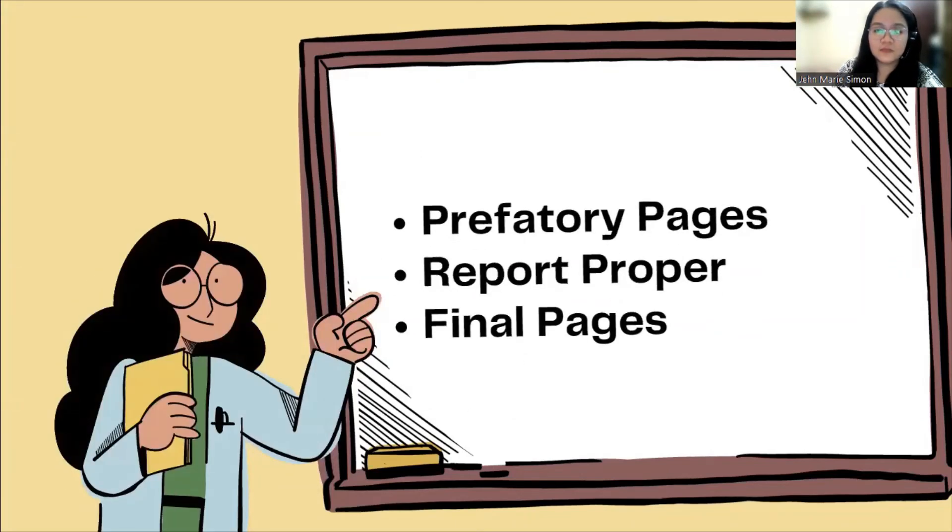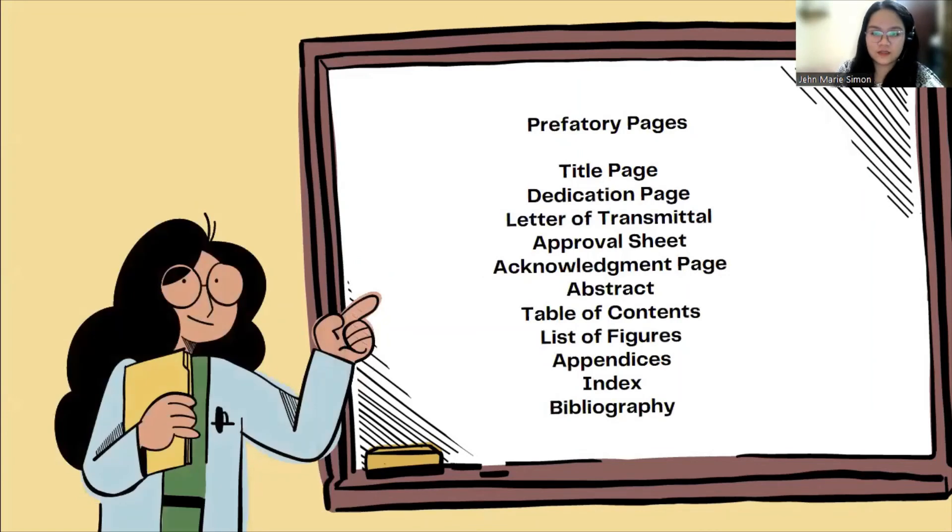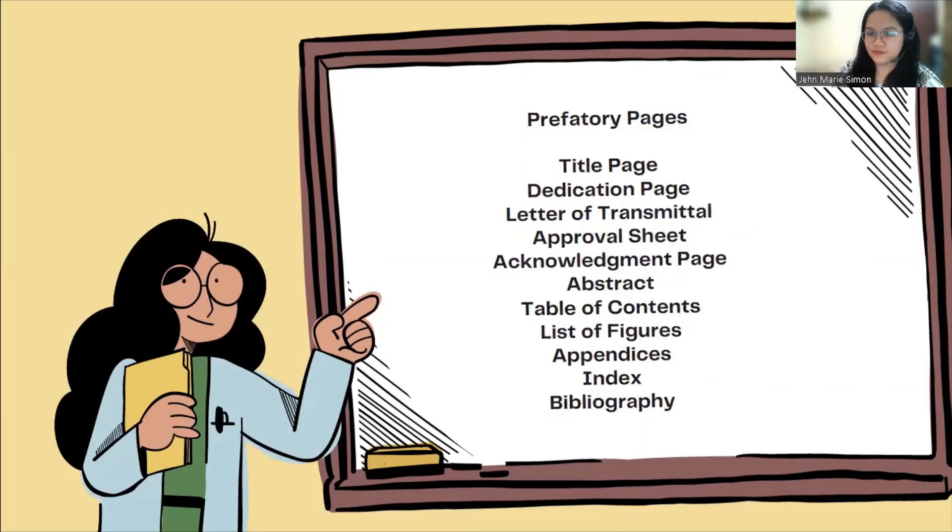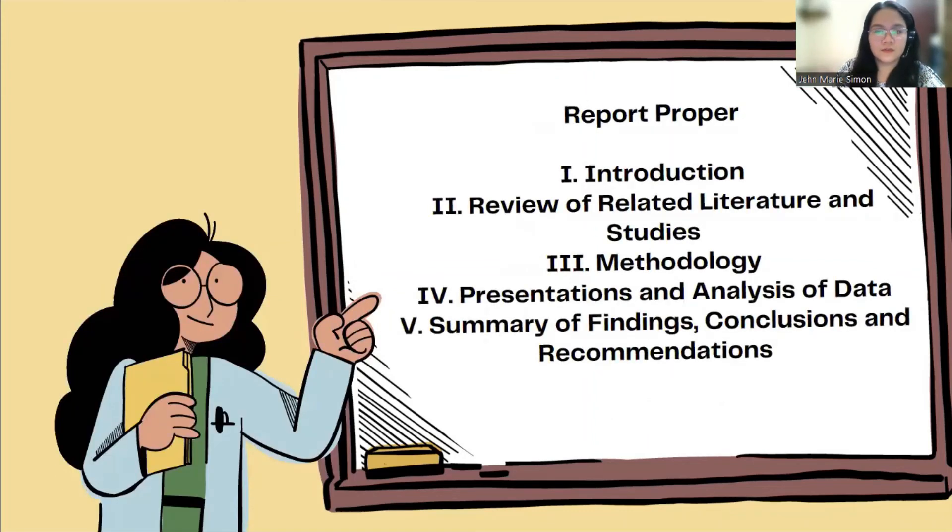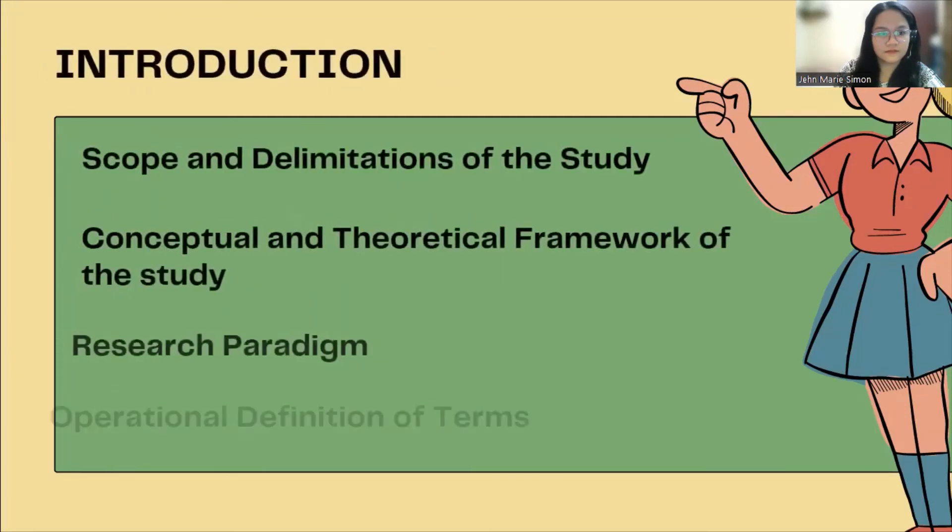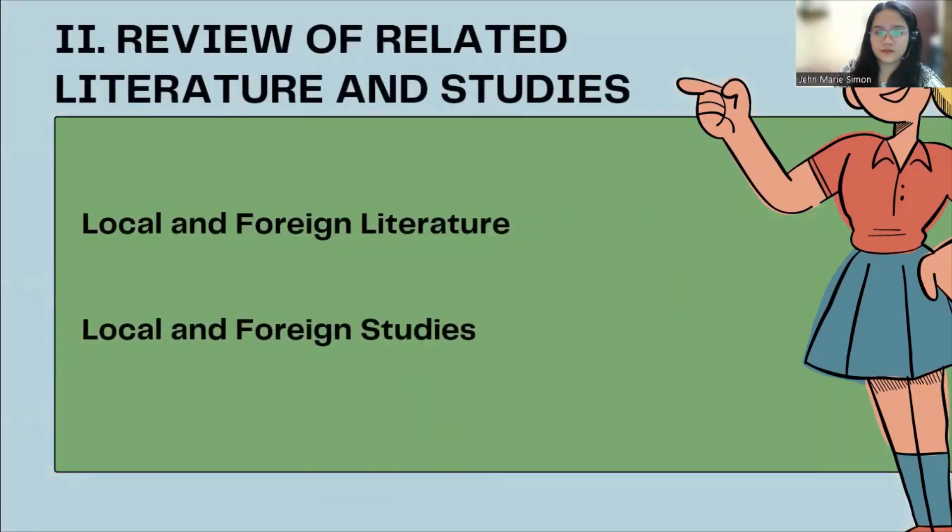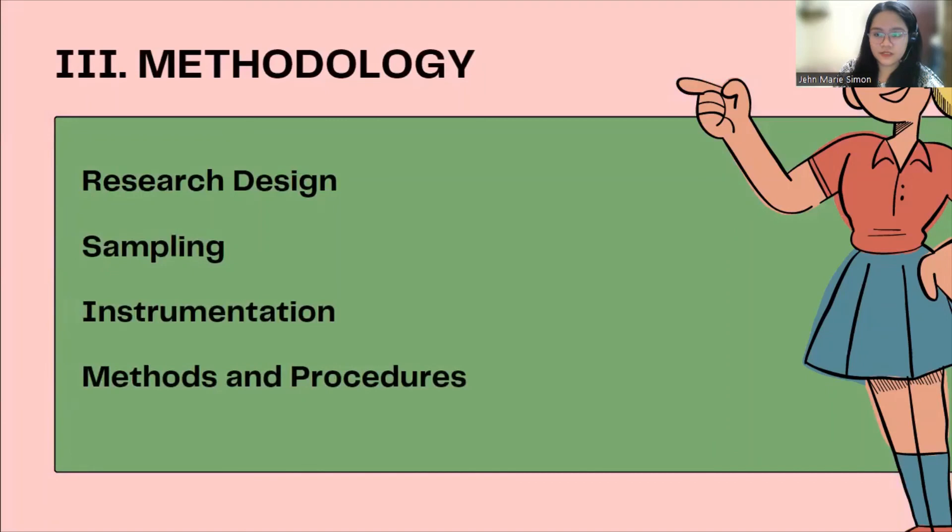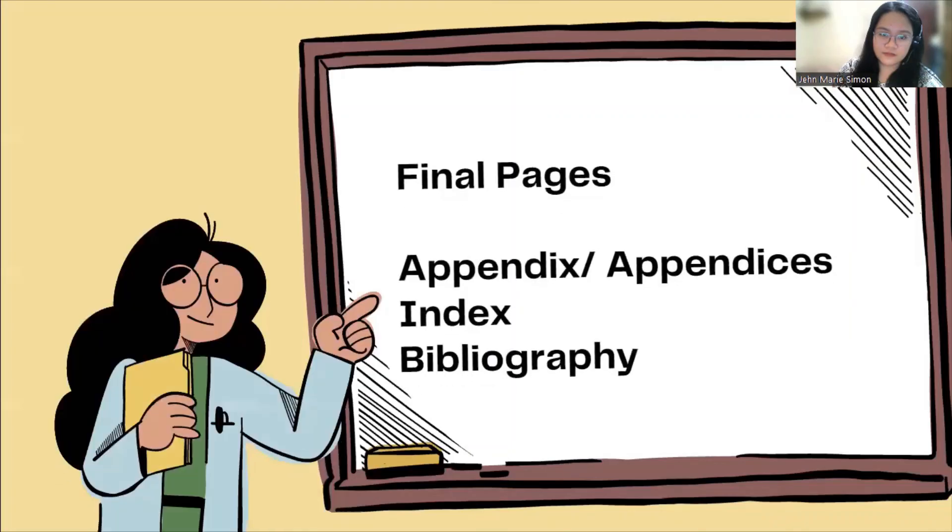A research paper has three main parts: the preparatory pages, the report proper, and the final pages. You may take a screenshot about the pages included in preparatory pages. And these are the report proper pages. In the introduction, in the literature review, in the methodology, in the presentation and analysis of data, summary findings, and the final pages. That's our discussion for today. Thank you.